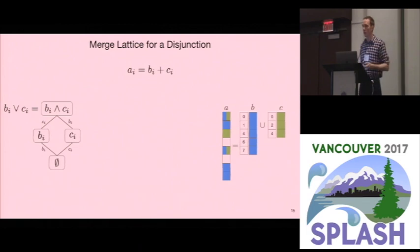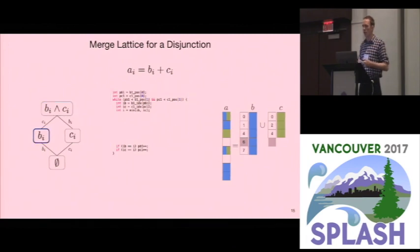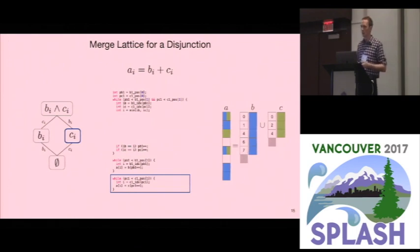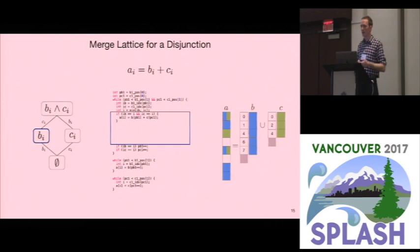Our compiler emits code lattice point by lattice point. First it emits code that iterates while both B and C have values — similar to the previous slide — until C is out of values. Then it emits code for adding in the rest of B and C. The second loop iterates until B is out of values and stores into the result. For cases, we emit one case per lattice point dominated by that lattice point: one for B and C, one for just B, and one for C. That gives us the whole code.